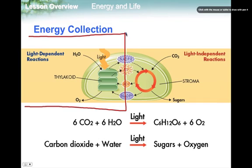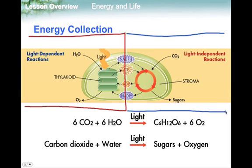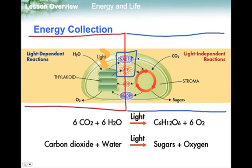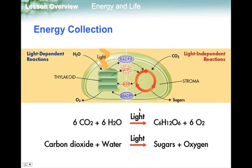Then we have the light-independent reactions, also called the Calvin cycle, named for the scientists who discovered them. It's a little misleading to call them truly light-independent because they rely on ATP and NADPH to function, and your plant gets those from the light cycle. So if we were able to artificially supply a plant with these two molecules, they would never need light. However, in nature, they use light to get them.